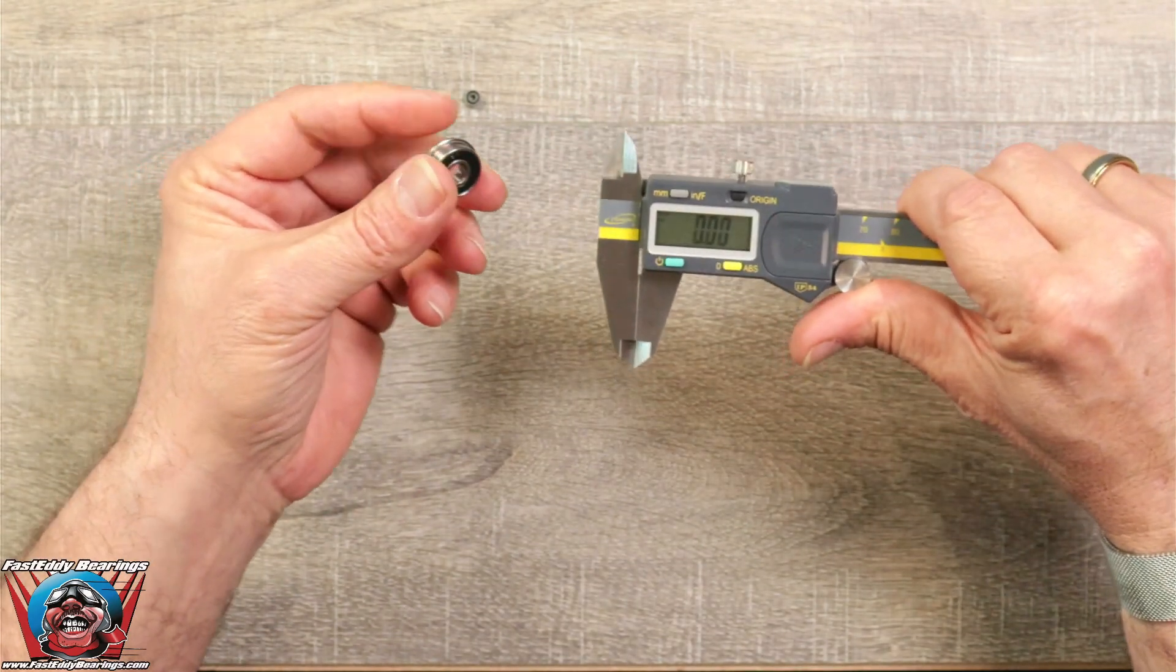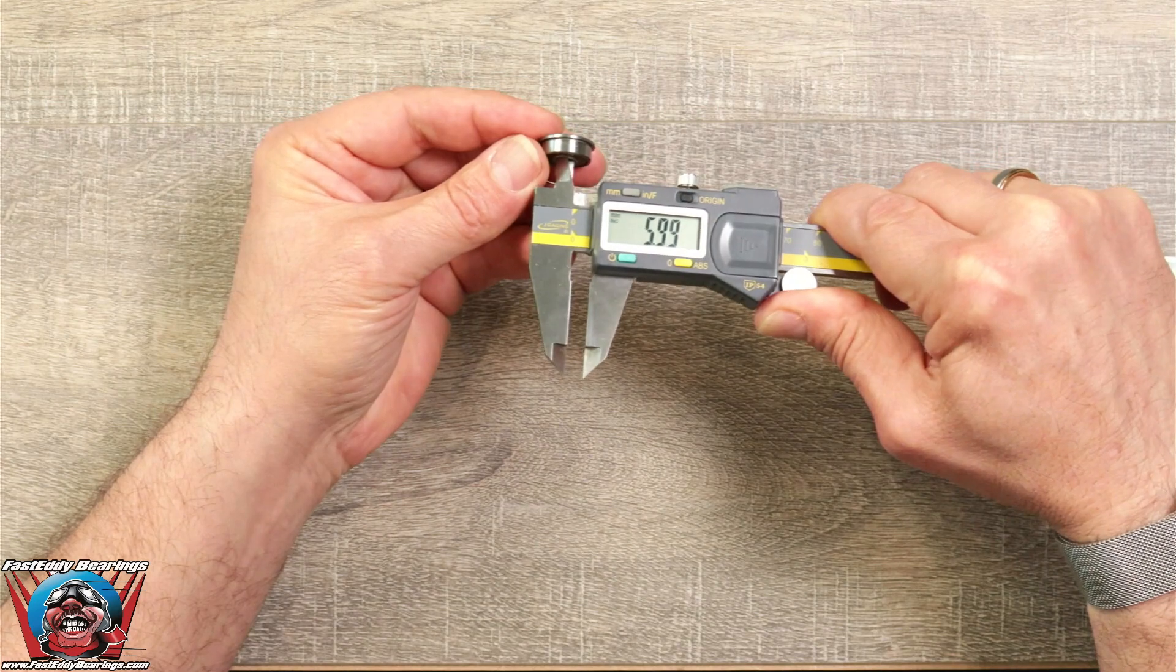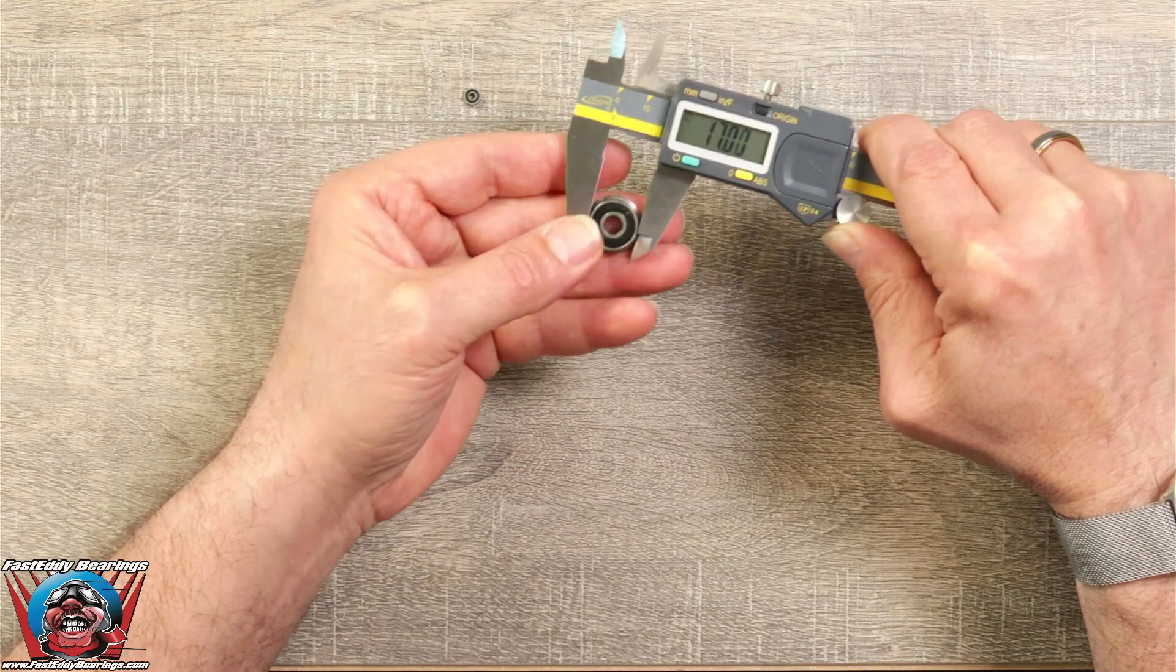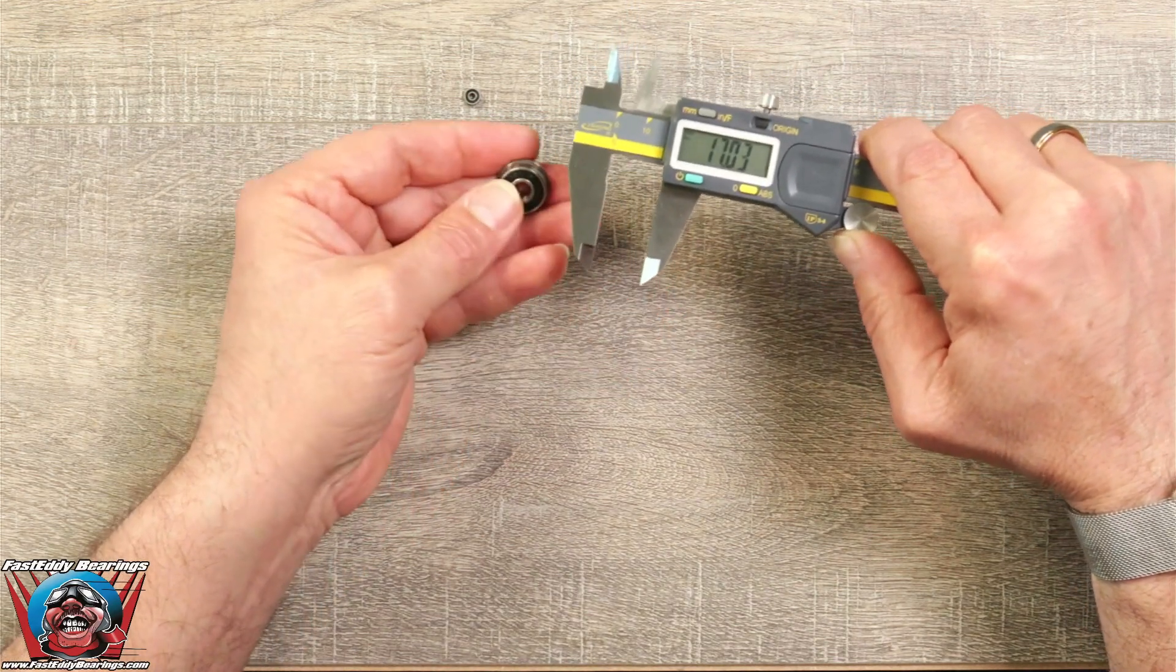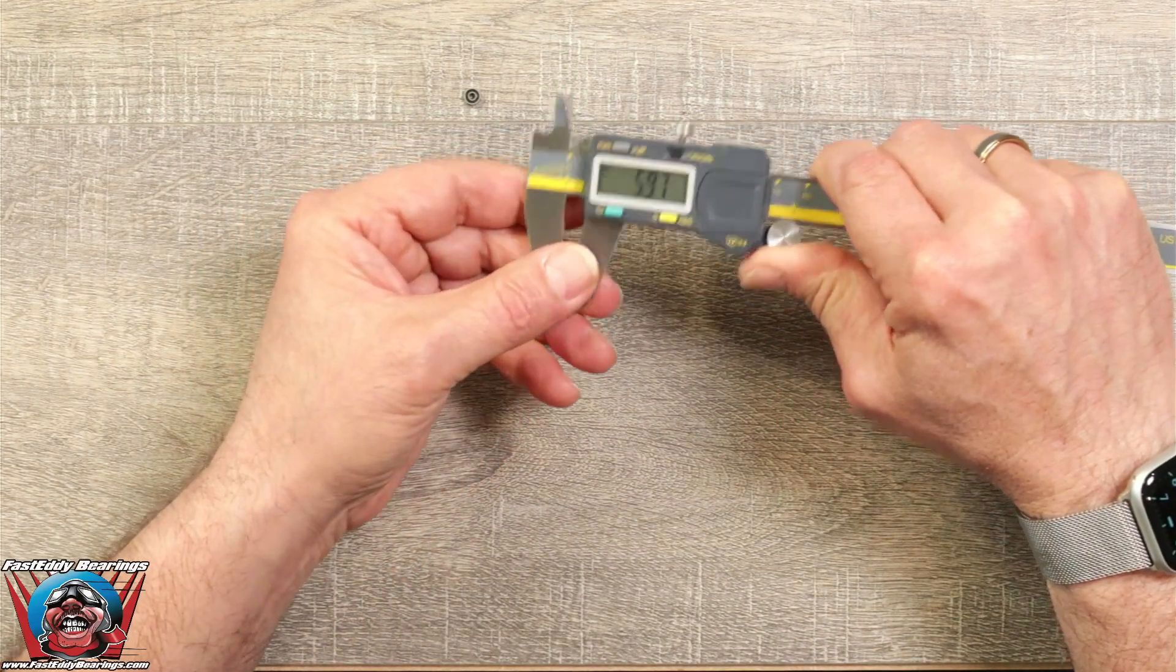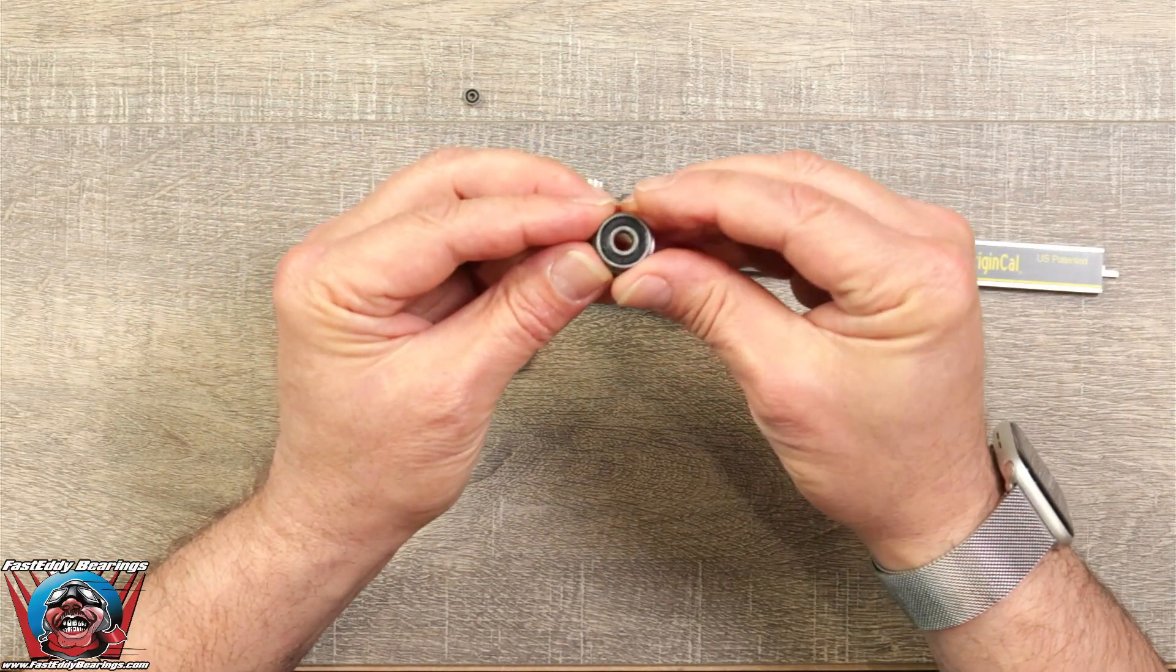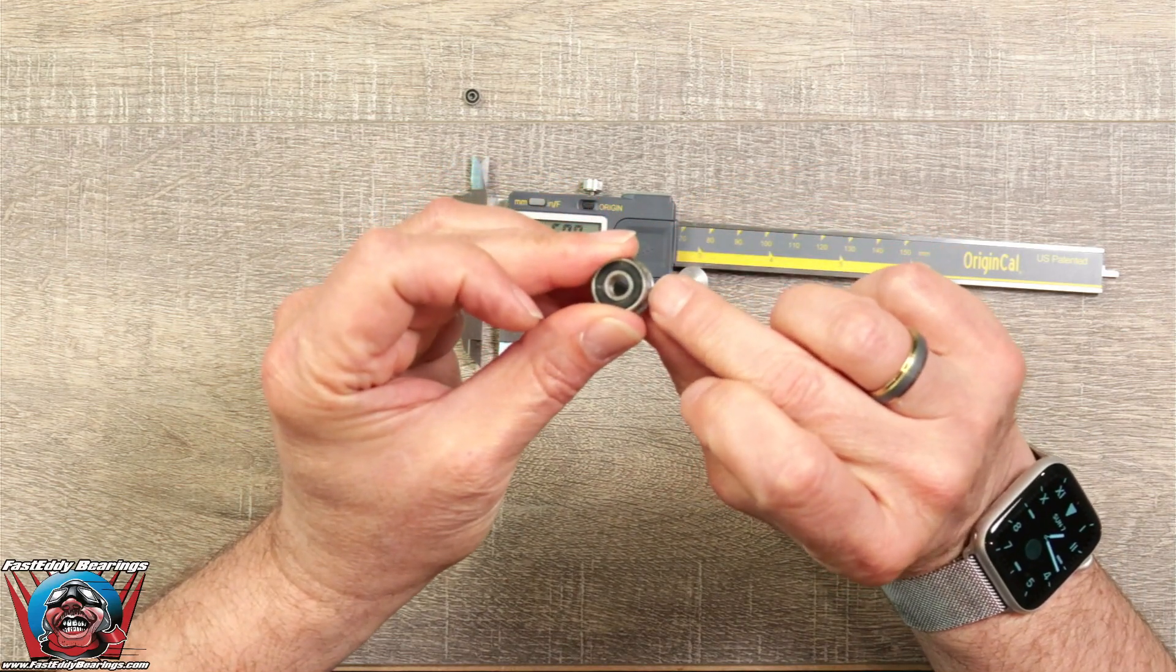So for this one, again, we're going to measure the inside dimension, which is a 6, by the outside dimension, which is a 17, by the width, which is a 6. So again, you're going to measure this the same exact way, inside dimension, by outside dimension, by width, but do not include the flange. So that's pretty simple.